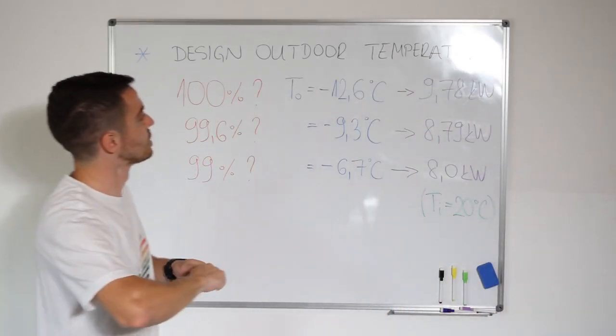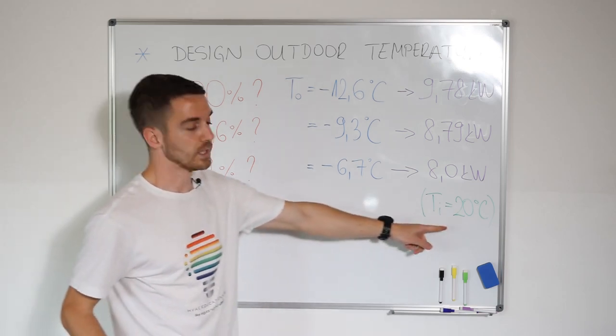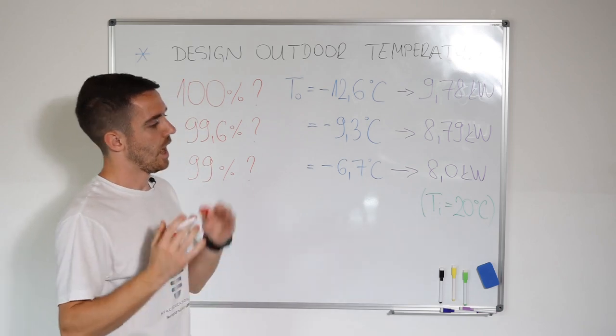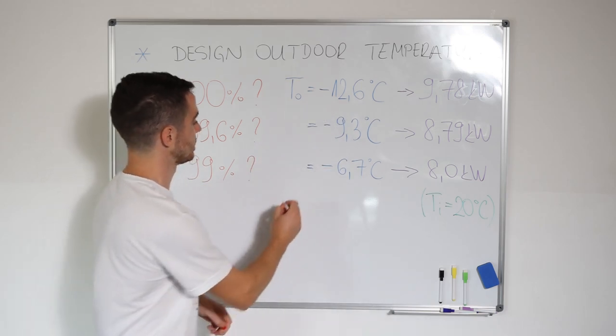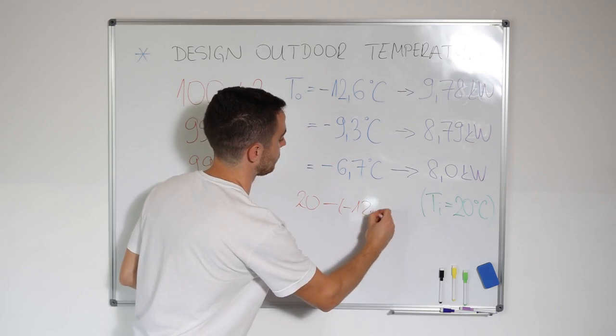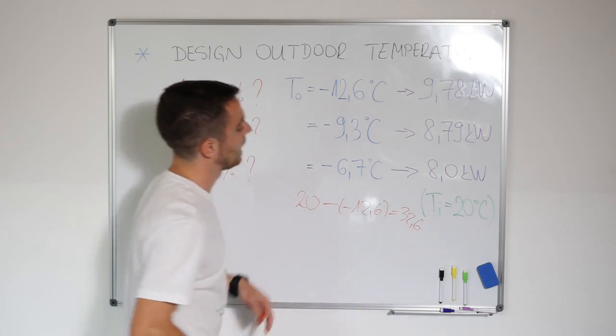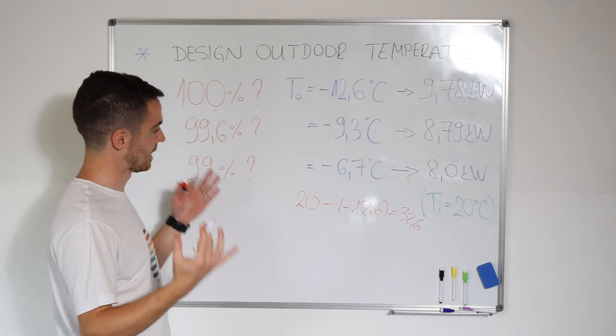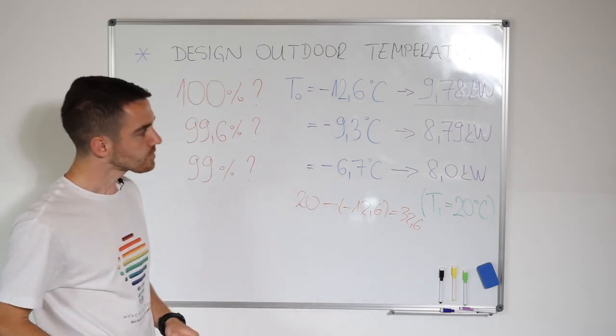Here, if we choose minus 12.6, indoor temperature is 20 degrees Celsius. It means that our outdoor-indoor difference is 32.6 degrees. So 20 minus minus 12.6 equals 32.6. And at that temperature difference, for some example or some house, we have 9.78 kilowatts heat loss.